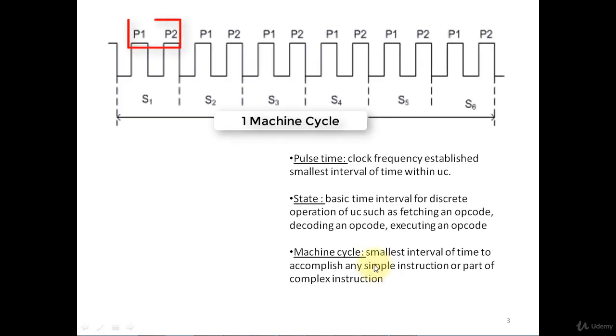Here in this diagram, P1 and P2 indicates pulse time. S1, S2, S3, S4, S5, S6 indicate state time and together they form one machine cycle.